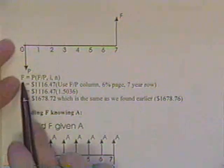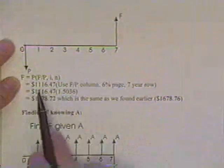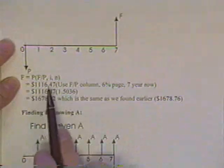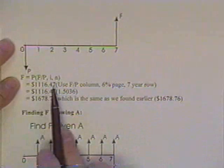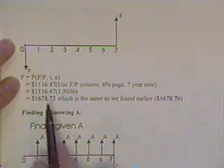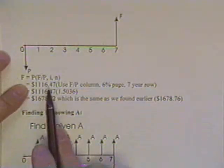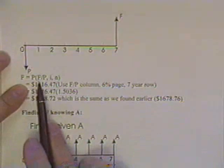If you were to solve for this future number, F, knowing a present number of $1116.47, you ought to get $1678.76. So we take $1116.47, we want to change the present value into a future value, which we think we know what that future value is. But we're checking it.